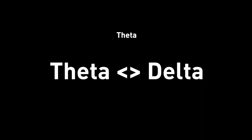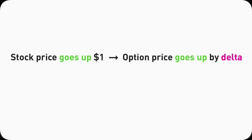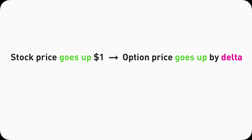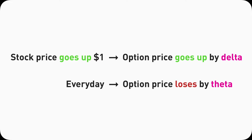Next: theta and delta. This is probably the most important part of this video. If you understand delta already, now is a great time to put theta and delta together to explain why new option traders, especially option buyers, will lose money. As we know, for every single dollar the stock goes up, the option price will go up by the delta amount. We also know the option contract price is supposed to drop by the theta amount if the stock stays flat.